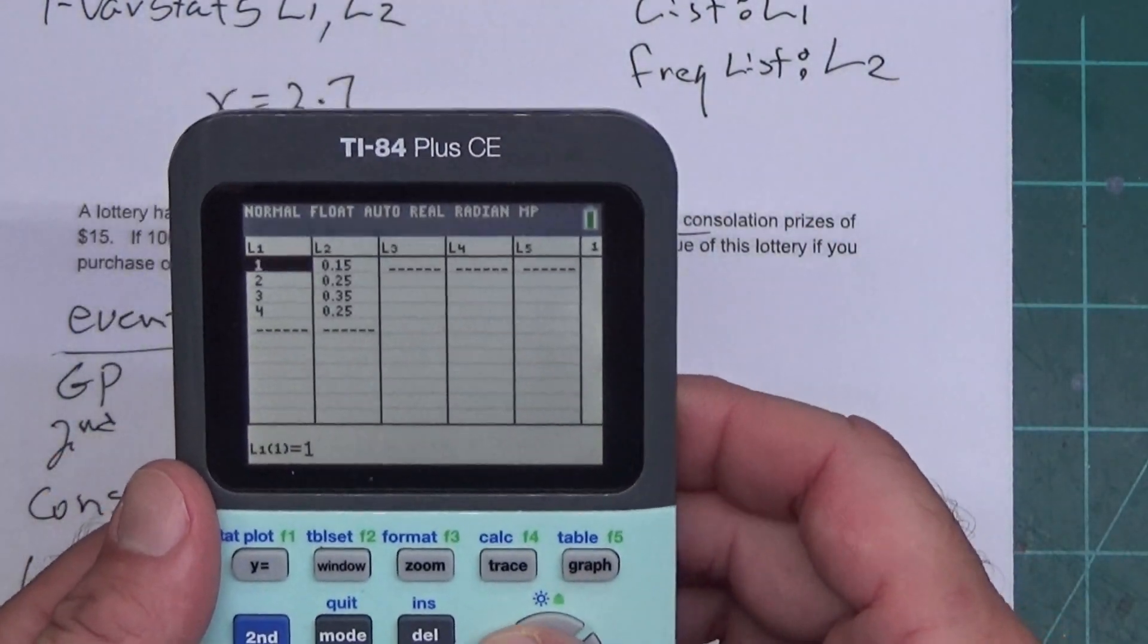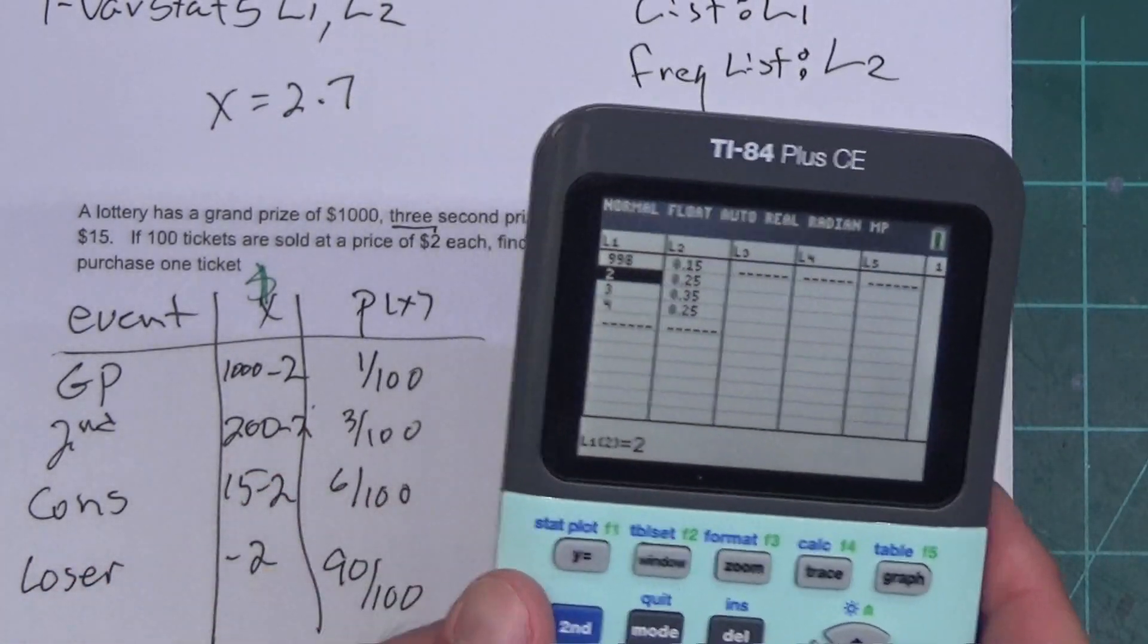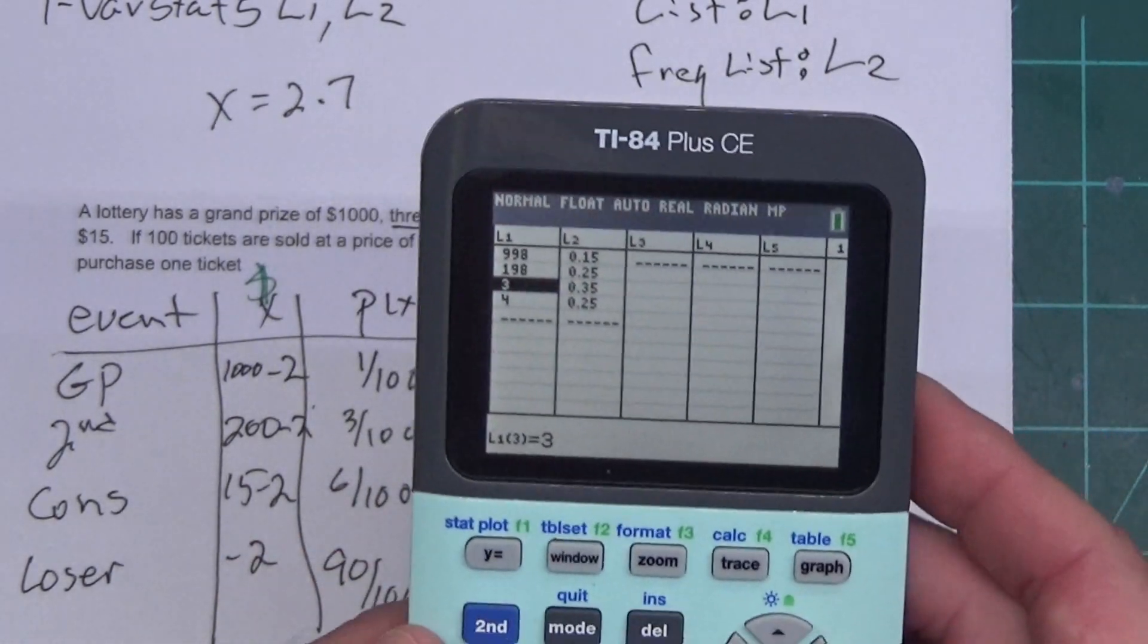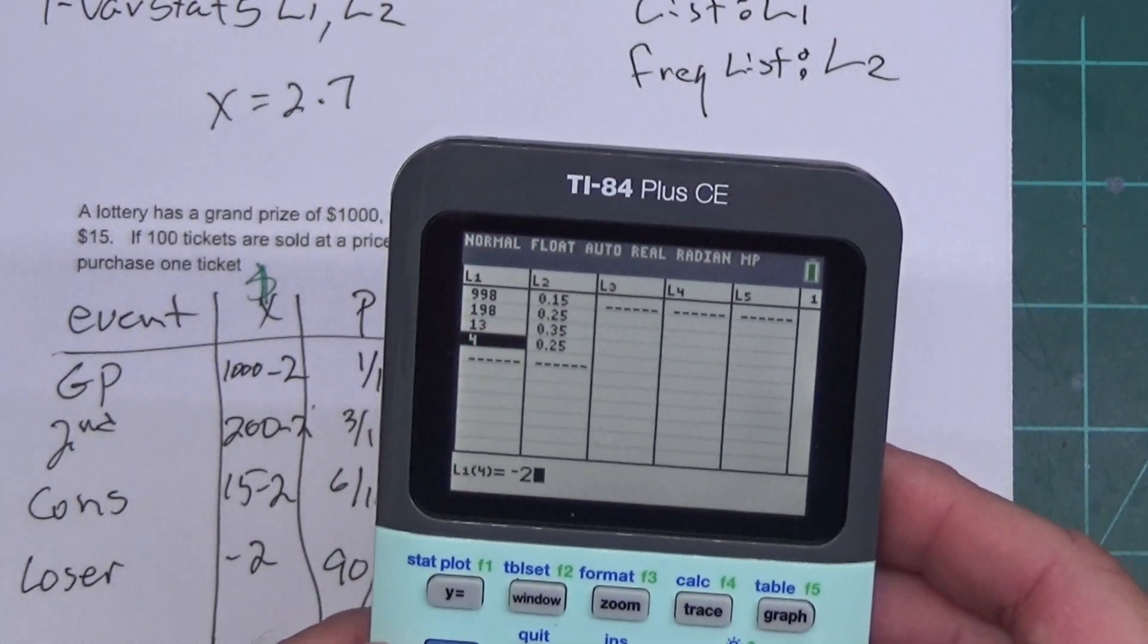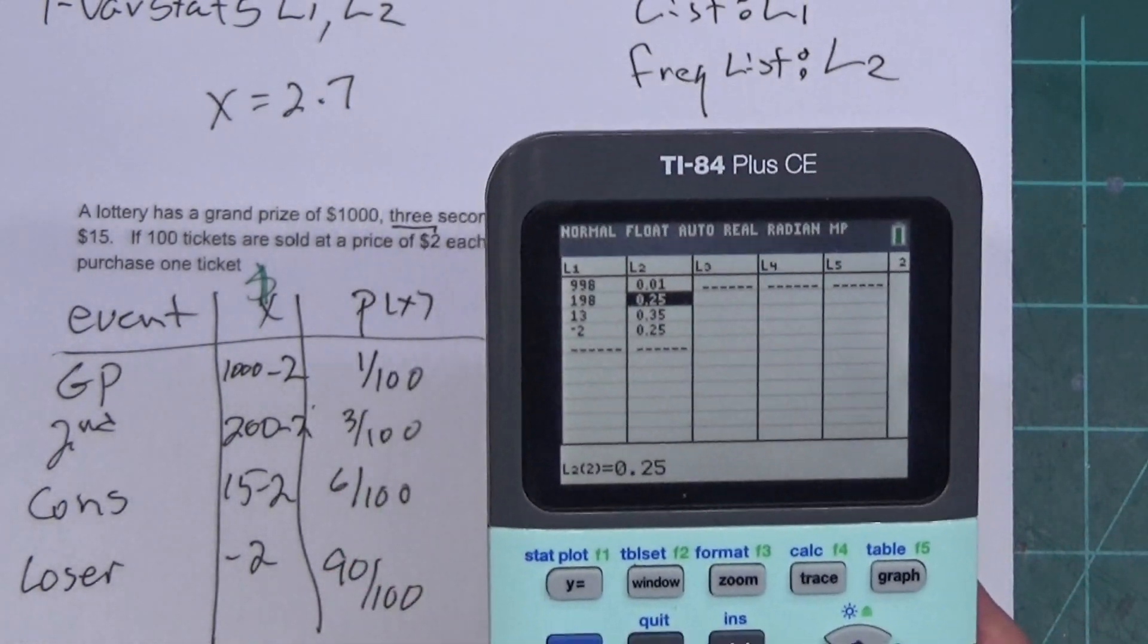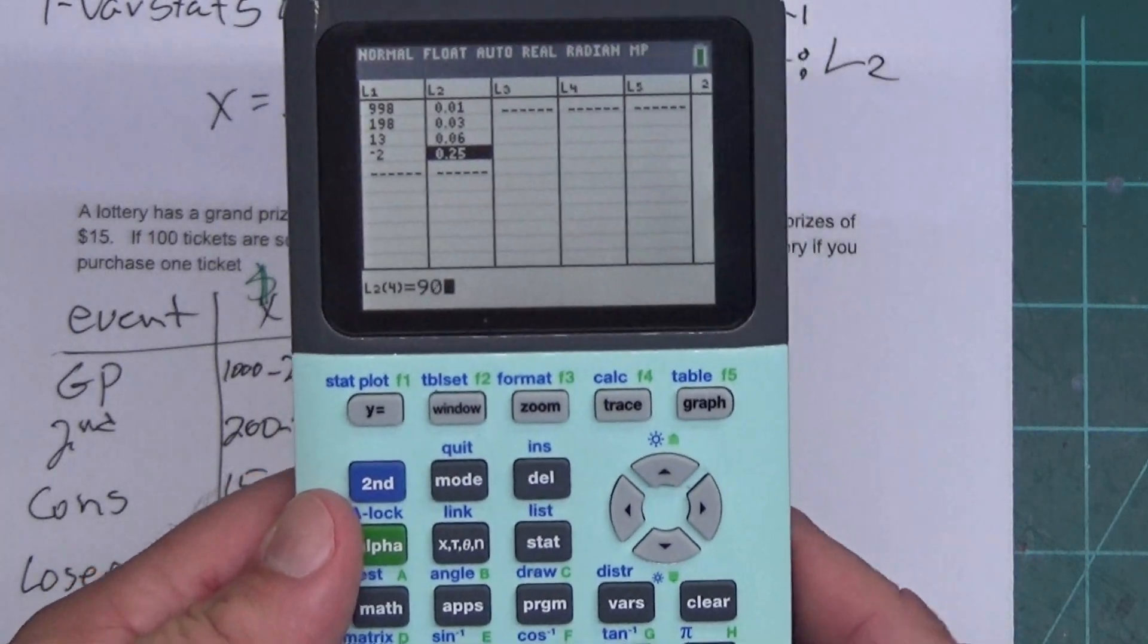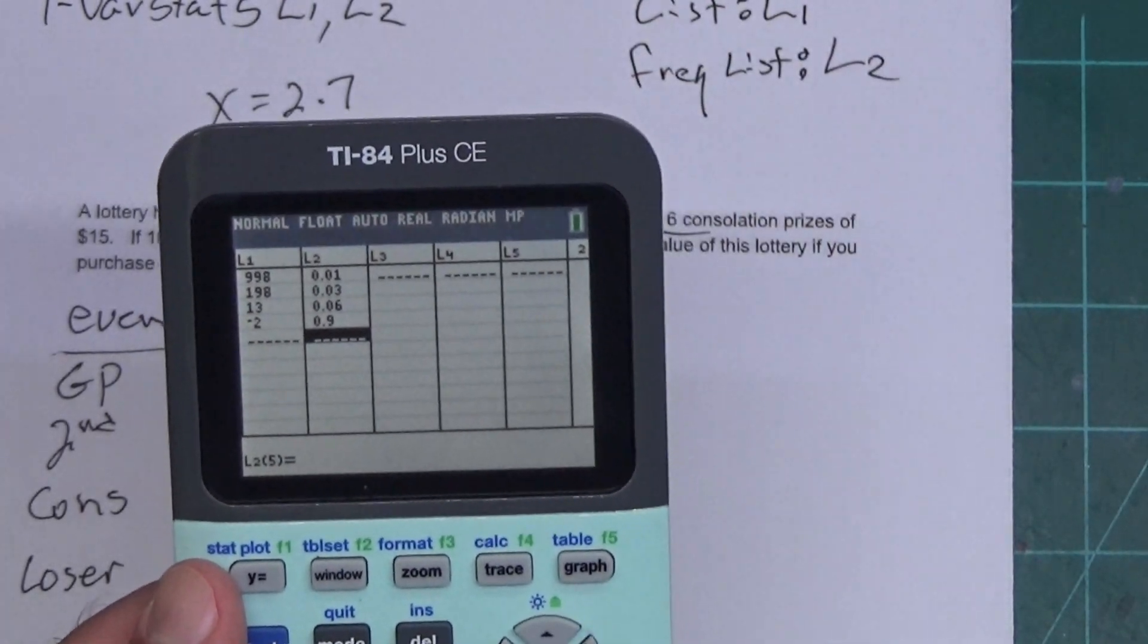What I'm going to do now is put this in my calculator. I'm going to press STAT and hit Enter. And I'm going to type the X values in here. I'm going to type 1,000 minus 2. I'm going to type 200 minus 2. You can do the math here. You don't have to do it beforehand. That's what the calculator's job is. So, 15 minus 2, and then minus 2. And then I'm going to come over here and type 1 out of 100, 3 divided by 100, 6 divided by 100, and then 90 divided by 100. Everyone follow what I've done there?